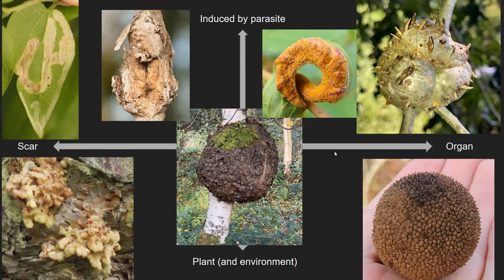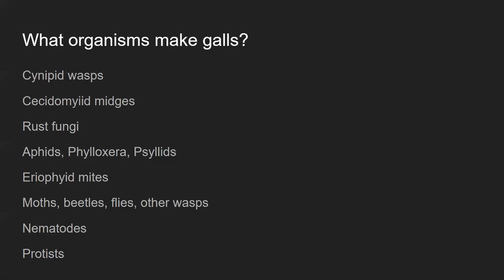Both the seed pod and the wasp gall would be organs composed of plant cells and plant DNA. The gall induction lifestyle is a very successful one — it has evolved independently in many different lineages.